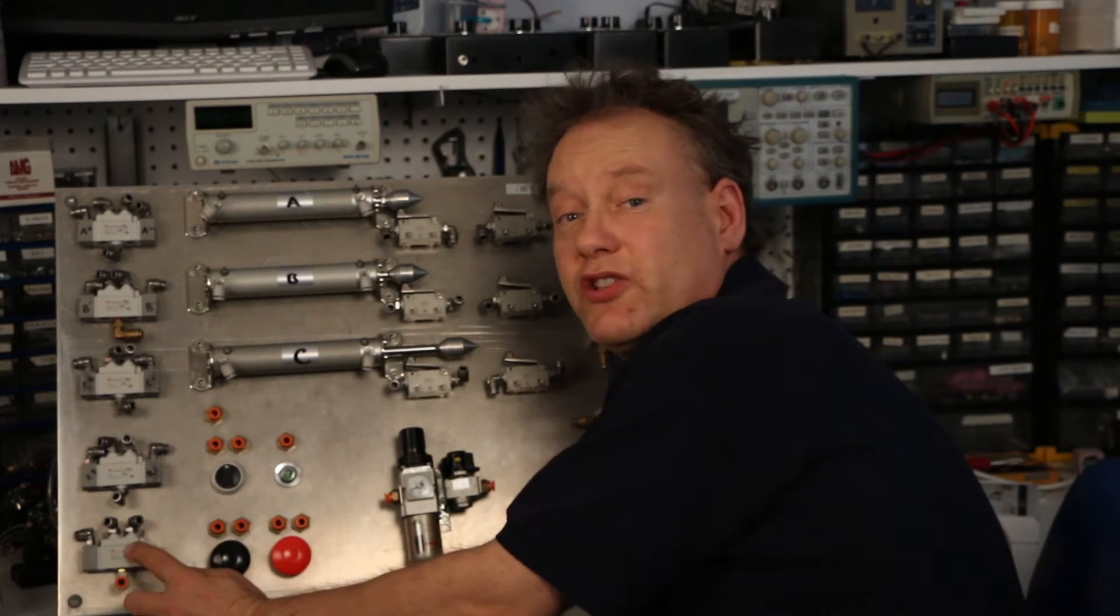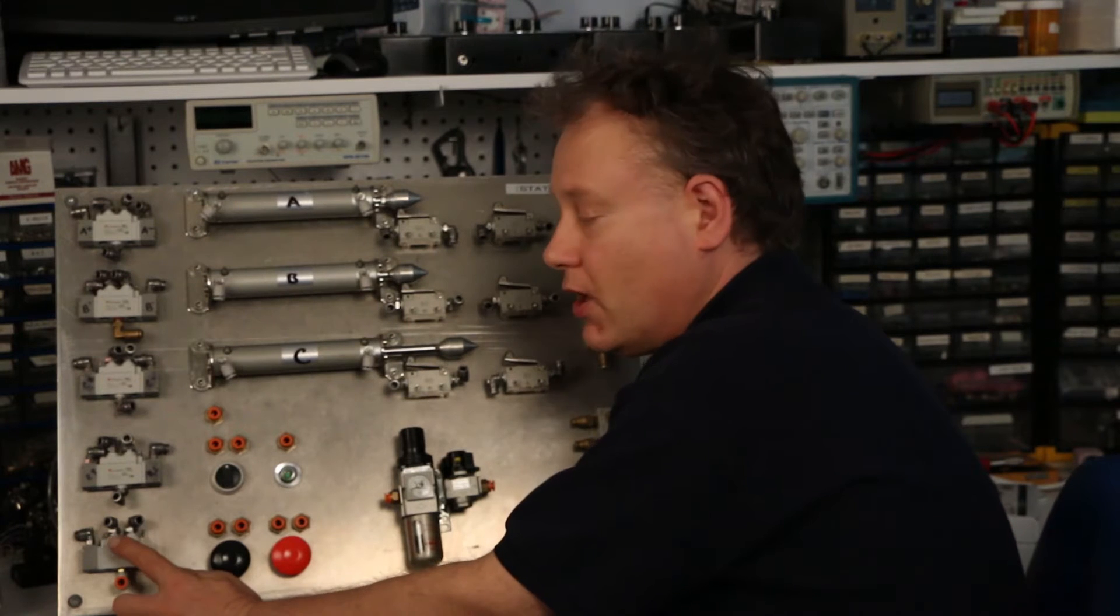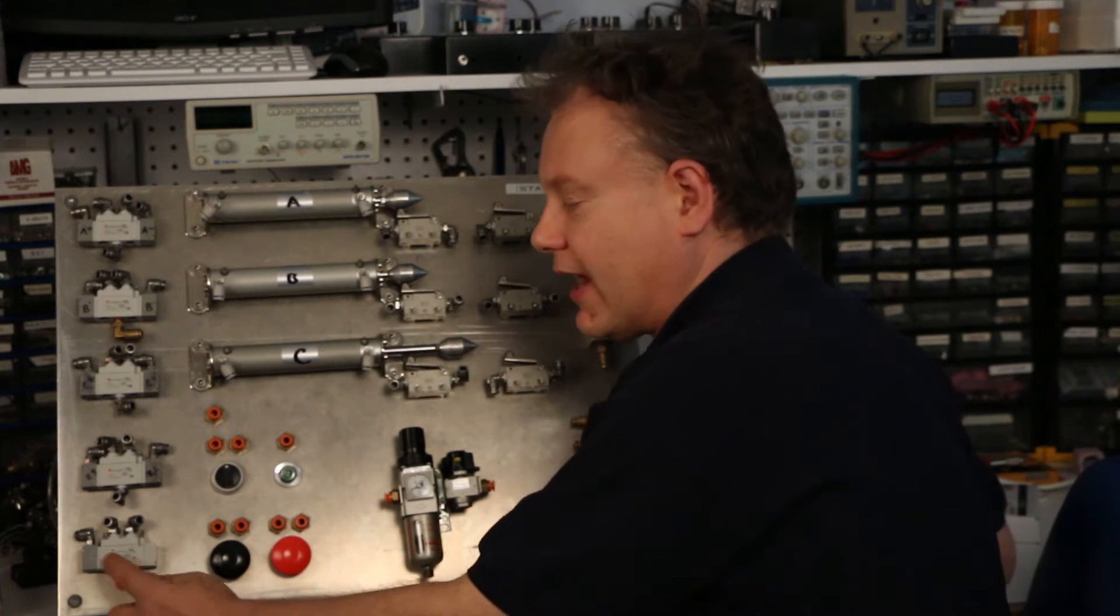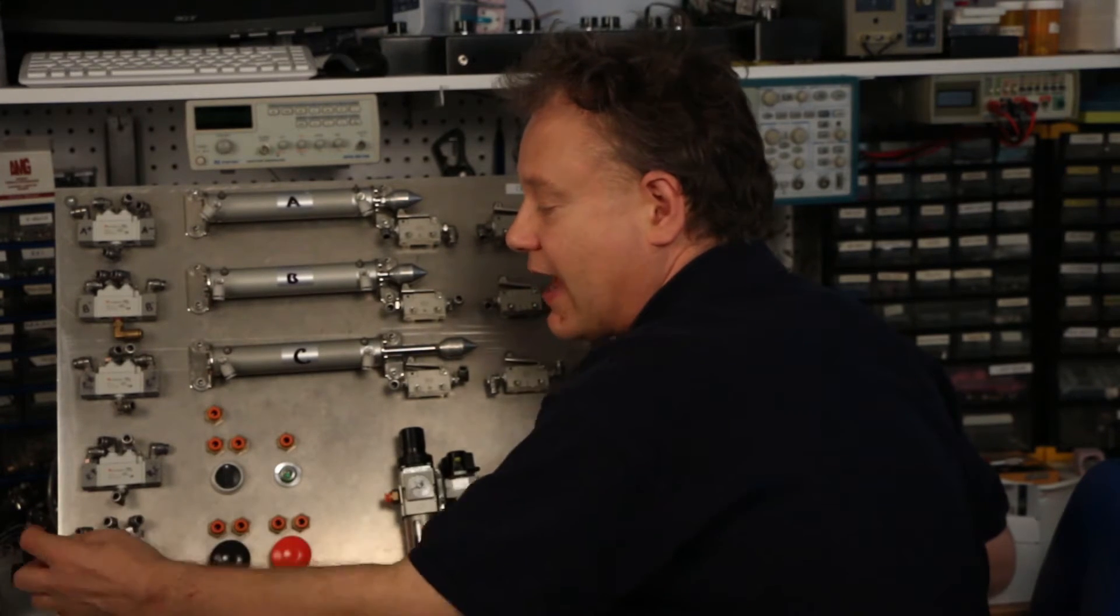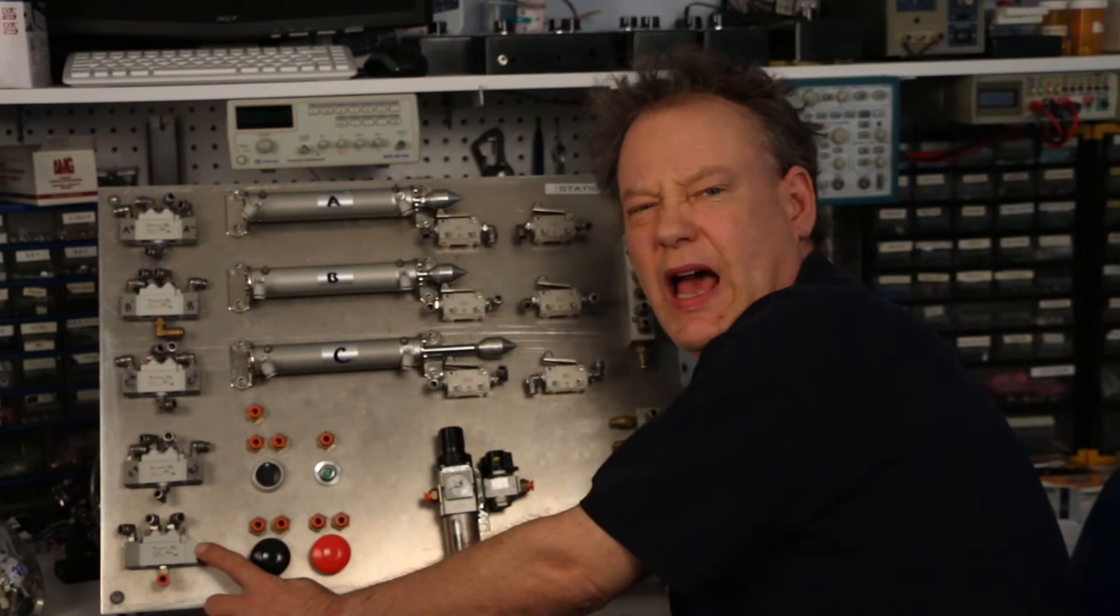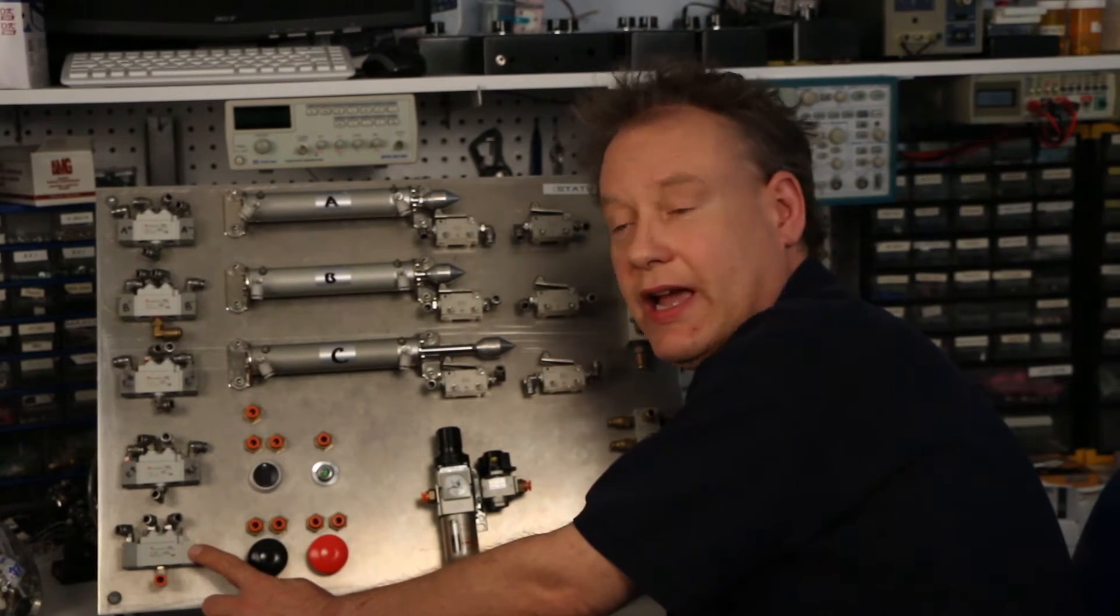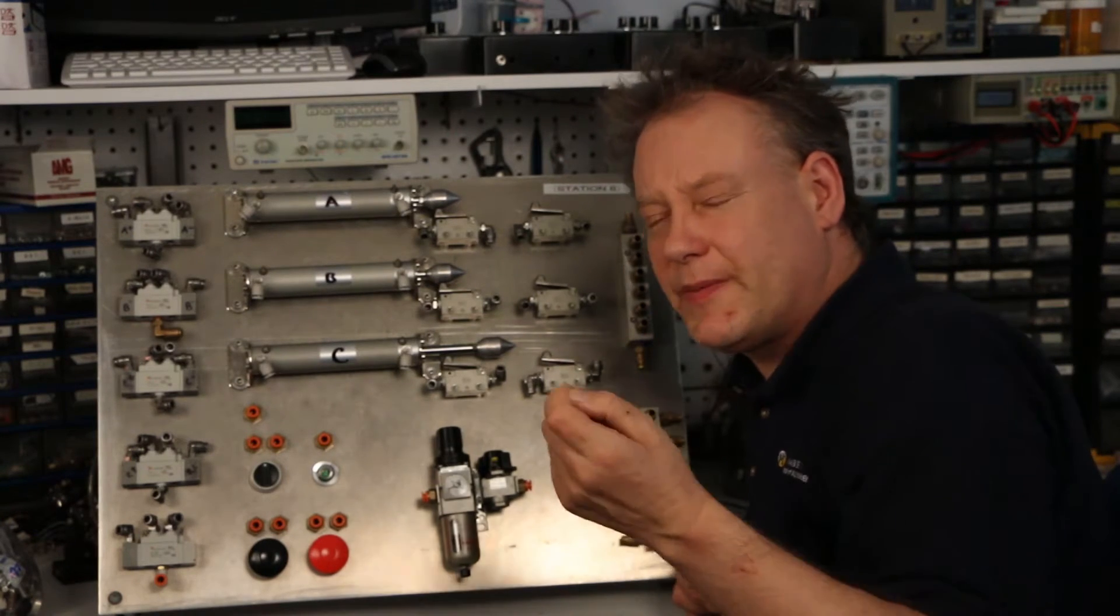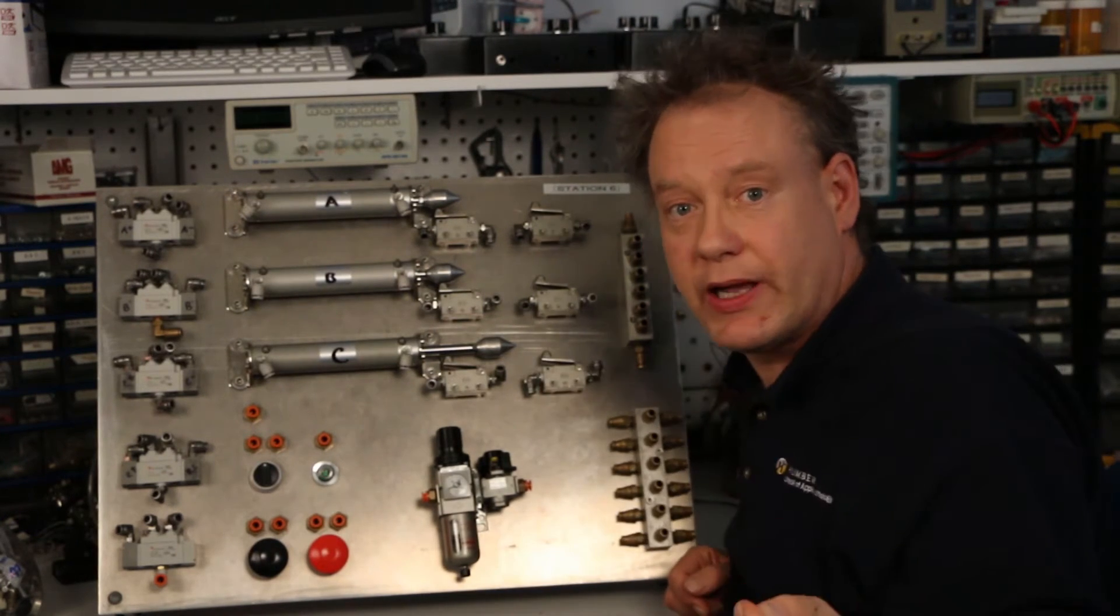Down here again, we also have, this is a pretty cool one, we have a five port, two position valve but take a look at it. This has a pilot on this side but it doesn't have a pilot on this side. What's up with that? It is a normal position. It is either normally passing or normally non-passing. It has to be normally something because we have a spring in it.